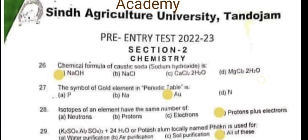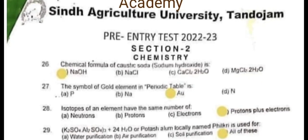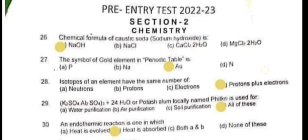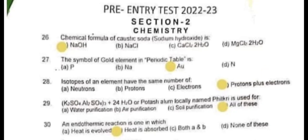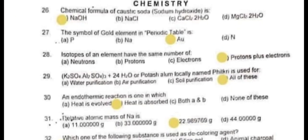Question number 26: The chemical formula of caustic soda, sodium hydroxide, is NaOH. Question number 27: The symbol of the gold element in the periodic table is Au.